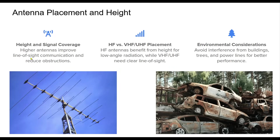Antenna placement and height play a role in signal propagation. Elevating an antenna improves its reach, especially for VHF and UHF signals that rely on line-of-sight communications. HF antennas, on the other hand, use ionospheric reflection, where height affects the takeoff angle of signals. Environmental factors such as buildings, trees, and nearby structures can introduce interference, making careful placement essential for optimizing performance. Choosing the right height and location enhances signal clarity and overall efficiency.